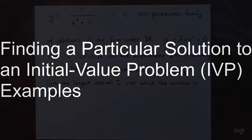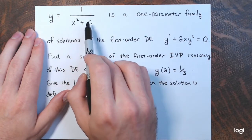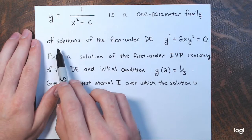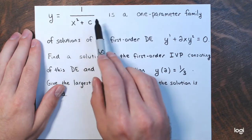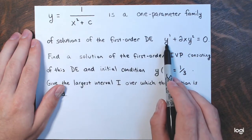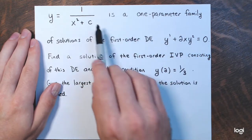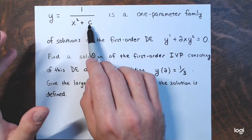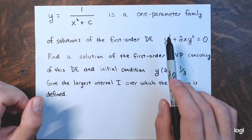In my first example, y equals 1 over x squared plus c, where c is a constant, is a one-parameter family of solutions of the first-order differential equation y prime plus 2x times y squared equals 0. This means that if I replace c with any number — 0, 1, 5, 1,000,000 — this function will satisfy this differential equation.